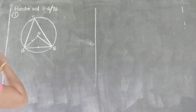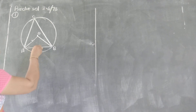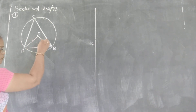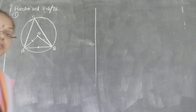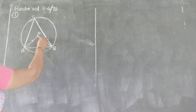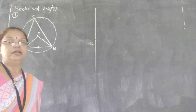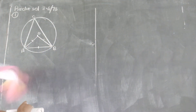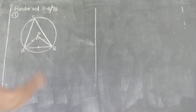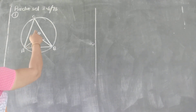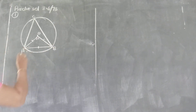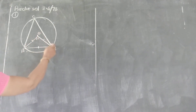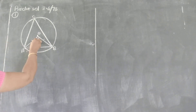Now let's see. If this chord AB is congruent to the radius, and this radius is congruent to this other radius — because they are from the same circle — that means segment AB, segment OA, and segment OB are all congruent. So triangle OAB is an equilateral triangle, and the measure of each angle is 60 degrees. Therefore, this angle, whose vertex is on the center, is a central angle, and its corresponding arc is also 60 degrees.